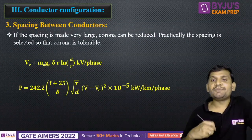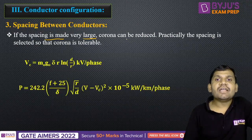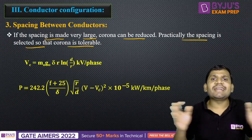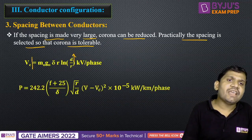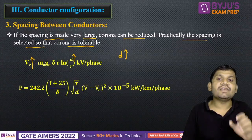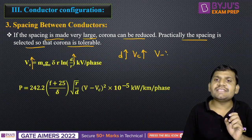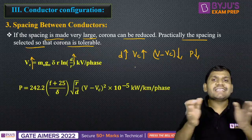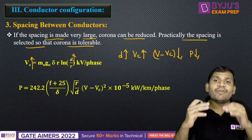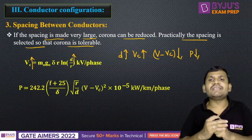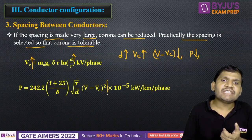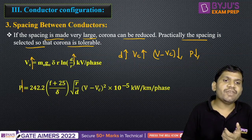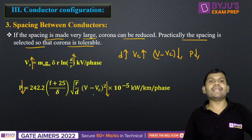One more point: the spacing between conductors. If the spacing is made very large, corona can be reduced. Practically, spacing is selected so that corona is tolerable, but this is a costly method. If the distance between conductors D increases, then Vc also increases. Once Vc increases, V minus Vc reduces, then corona loss reduces. However, increasing conductor spacing increases cross-arm length, tower size, and cost.